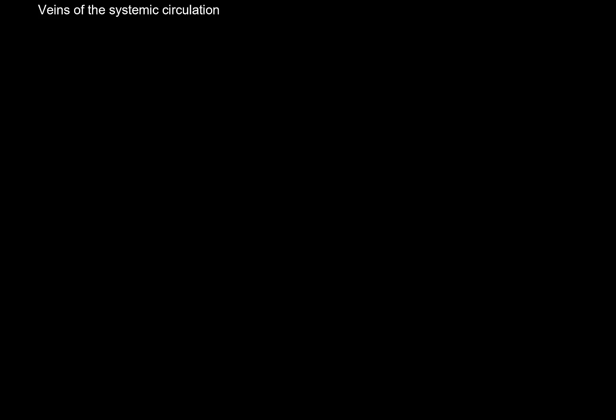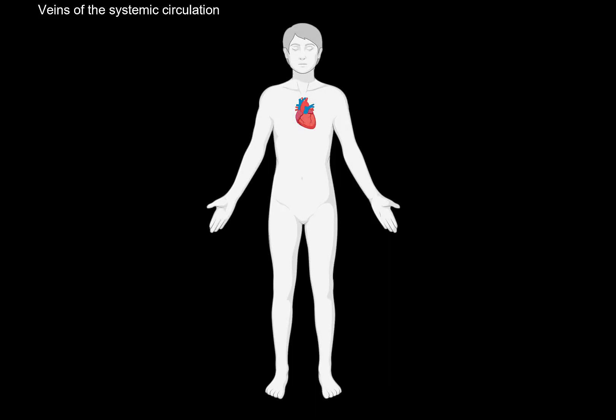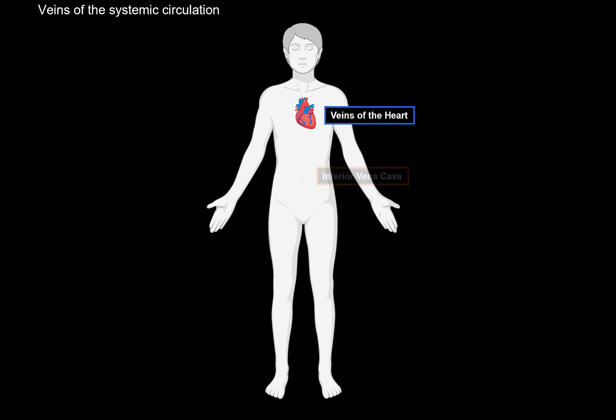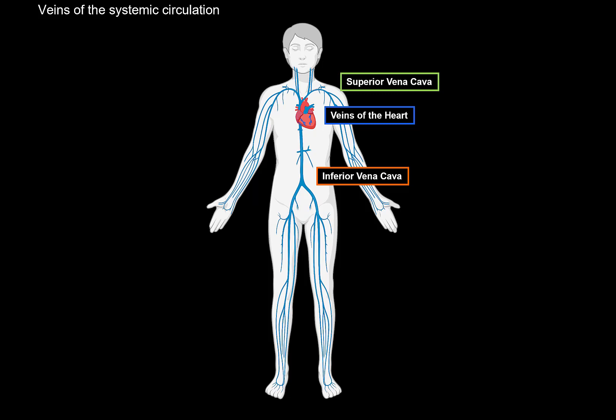The easiest way to understand the veins of the systemic circulation is to divide them into their own systems. The veins of the heart form their own system. We have the veins of the inferior vena cava, which is responsible for supplying the lower half of the body. We have the veins of the superior vena cava for the upper half of the body, and the portal system, which drains nutrition from the intestines and waste products from the spleen, and dumps them into the liver to be processed, which then leads the blood into the inferior vena cava again. So these are the four main systems of veins we have in our body.